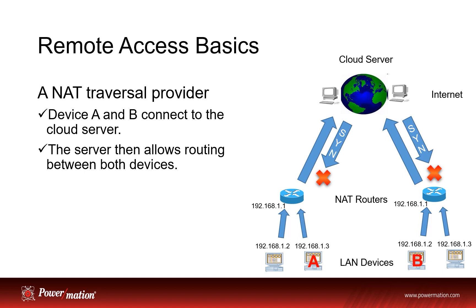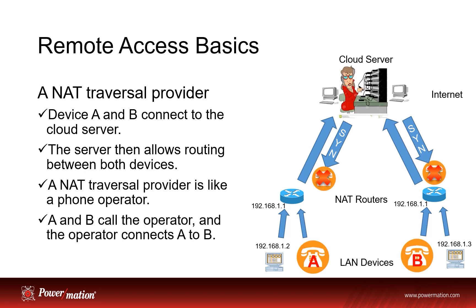So how do two separate devices under their own routers talk to each other if everyone's ringer is turned off? That is the job of the NAT traversal provider or server. Device A and B connect to the same cloud server, and that server configures routes between both devices. This server is like a phone operator — A and B call the operator, and the operator connects A to B.